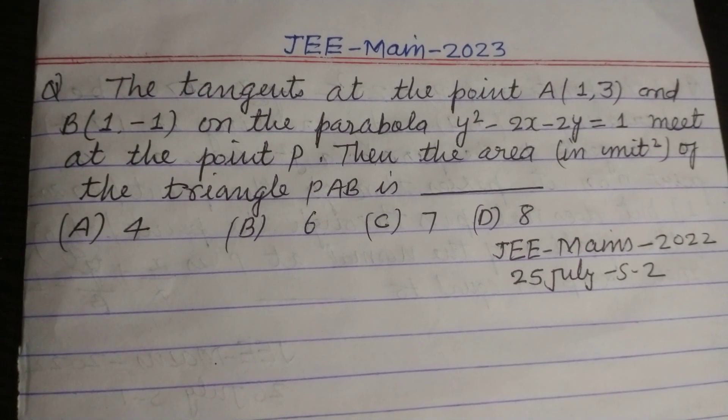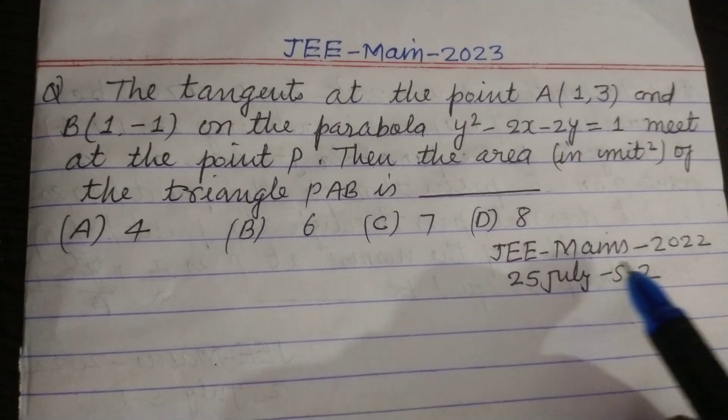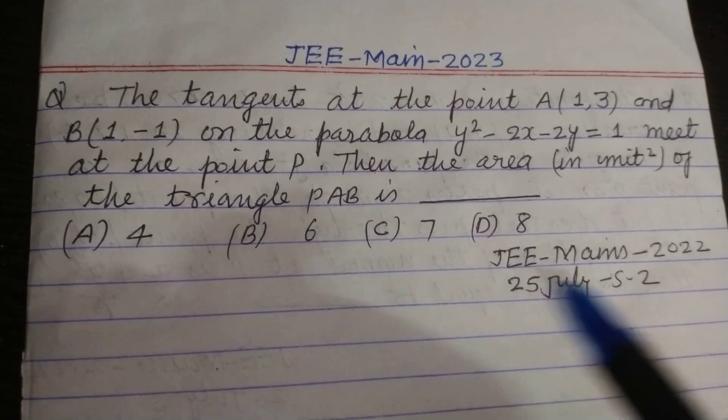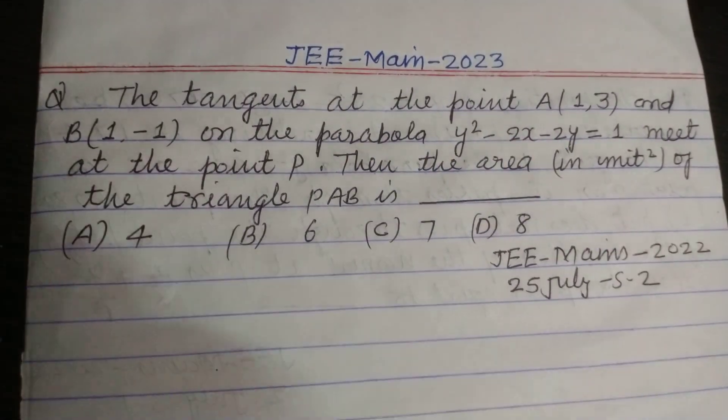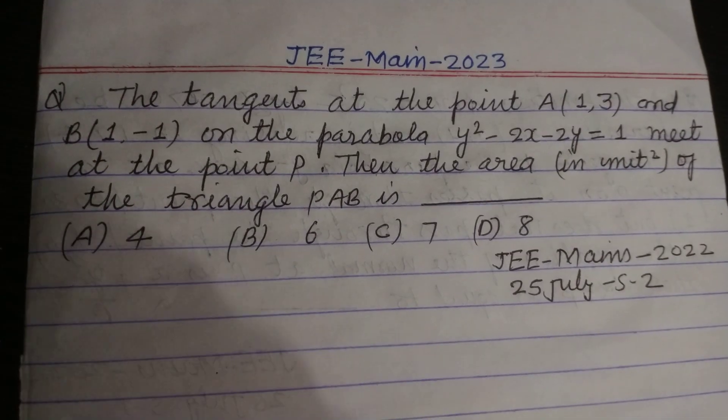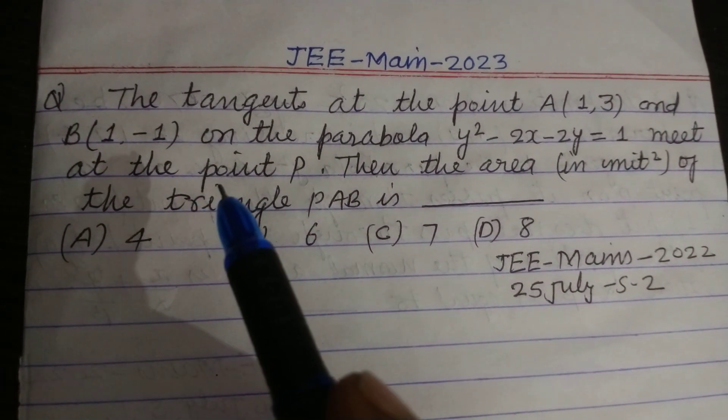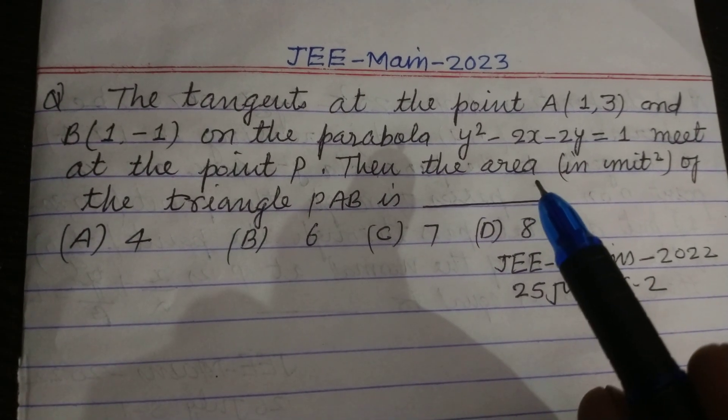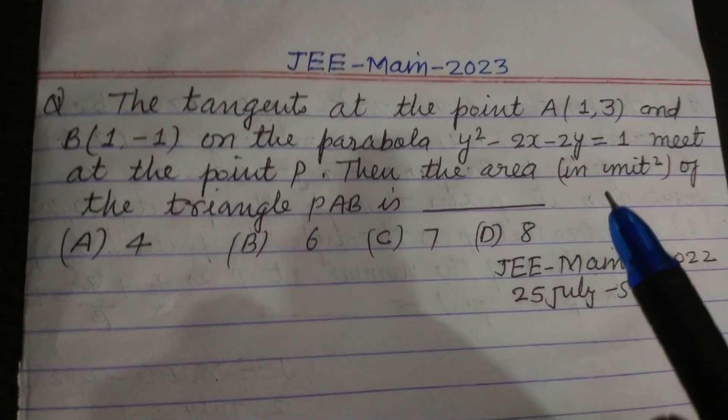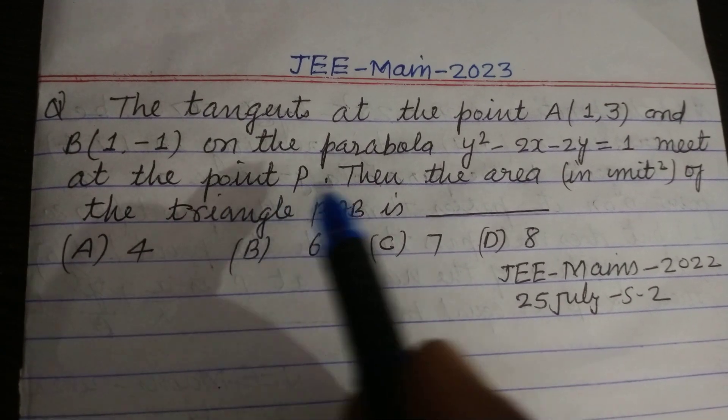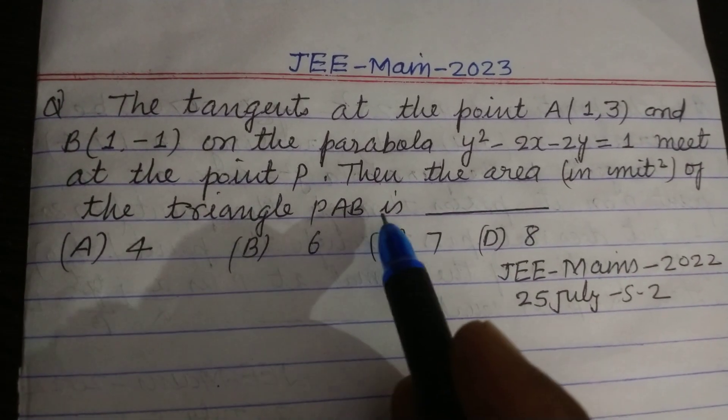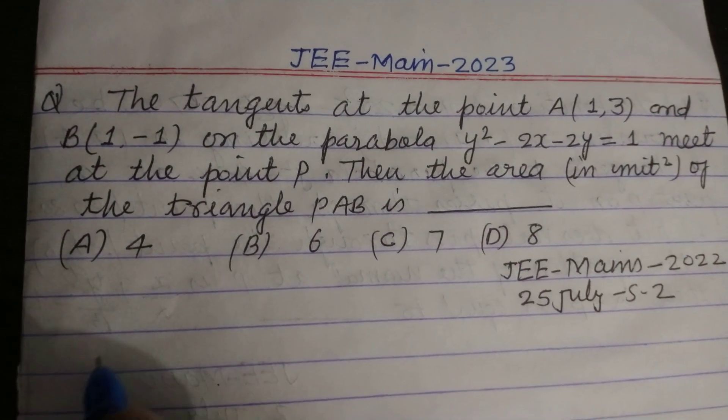Hello student, welcome to this YouTube channel. Question from JEE Main 2022, 25 July shift. The tangent at the point A(1,3) and B(1,-1) on the parabola y² - 2x - 2y = 1 meet at the point P, then the area in unit square of the triangle PAB is.